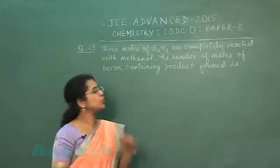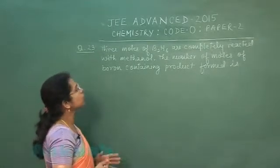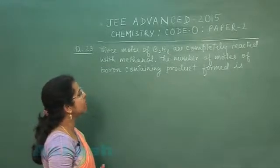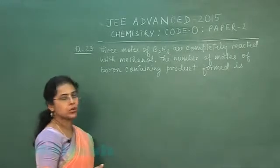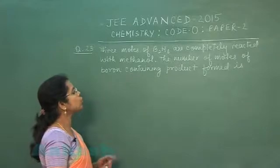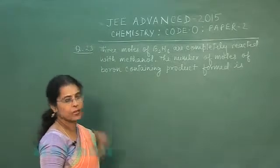So, moving to the next question. Question number 23. 3 moles of B2H6 are completely reacted with methanol. The number of moles of boron containing product formed is?